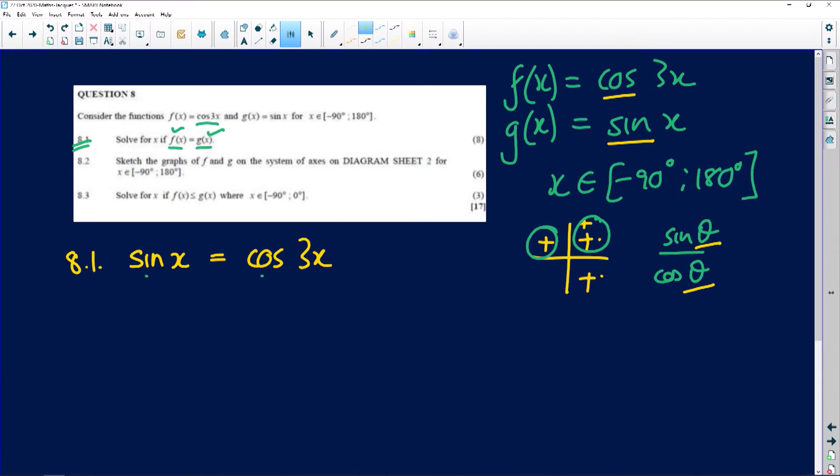Or we can use co-ratios. Now, in the equation form, you want to use your co-ratios. And that is why we are working in the first two quadrants. Here, the complementary ratio is 90 minus something. In the second quadrant, it's 90 plus something. So, we're going to change sine to cosine.